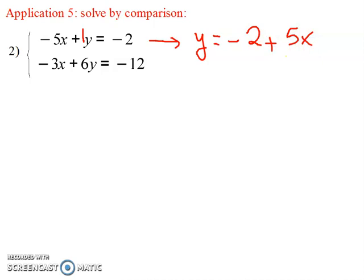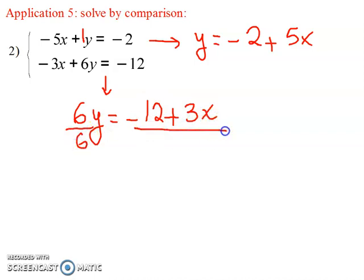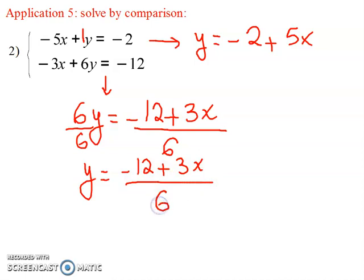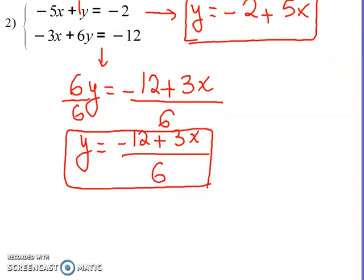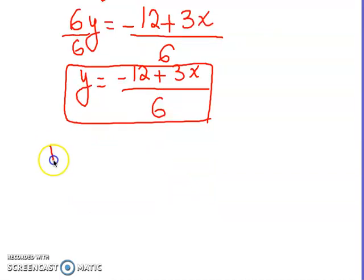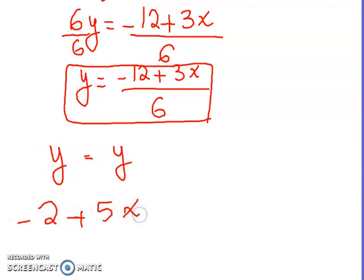Now that we have y from the first equation, we isolate y from the second equation as well: six y equal minus twelve plus three x, then divide both sides by six. It is easier to keep it as one fraction. So these two y expressions are equal; we set y equal y: minus two plus five x equal minus twelve plus three x over six.